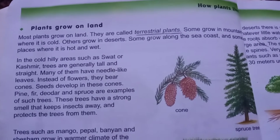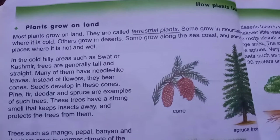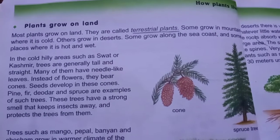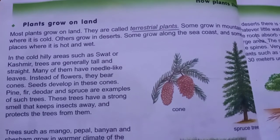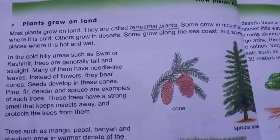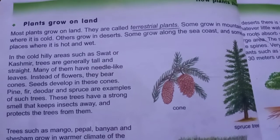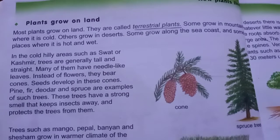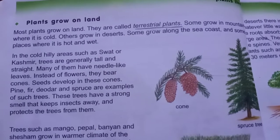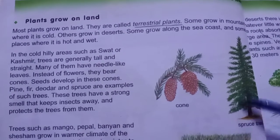Plants grow on land. Most plants grow on land — they are called terrestrial plants. جو plants land پر grow کرتے ہیں وہ terrestrial plants کہلاتے ہیں۔ ان میں سے کچھ plants mountains پر grow کرتے ہیں۔ ایسی cold places کے plants میں needle-like leaves ہوتے ہیں اور flowers کی بجائے ان میں cones پائے جاتے ہیں۔ For example: spruce tree.